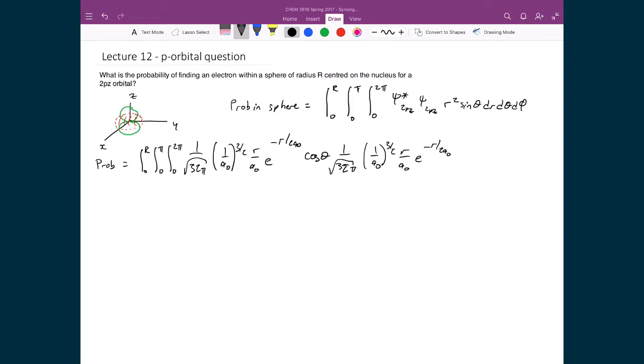And to that, I'm multiplying cosine theta, which finishes ψ of 2p_z. Then I have the volume element: r² sine theta dr dθ dφ.